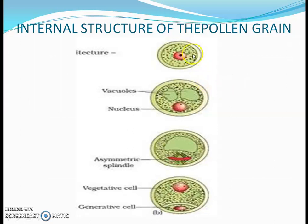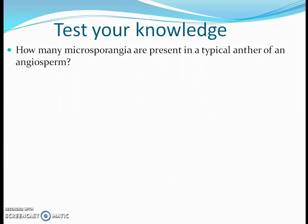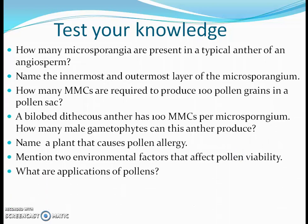Now you can see the internal structure of the pollen grain. Vacuoles are present along with the nucleus, and it is divided into two cells. Here is the vegetative cell. When it is at the three-cell stage, the generative cell divides to form two male gametes. The function of the vegetative cell is that it grows as the pollen tube, allowing the male gametes to pass through and reach the ovule or egg. Now it is time to test your knowledge — go through the questions. Thank you and have a nice day.